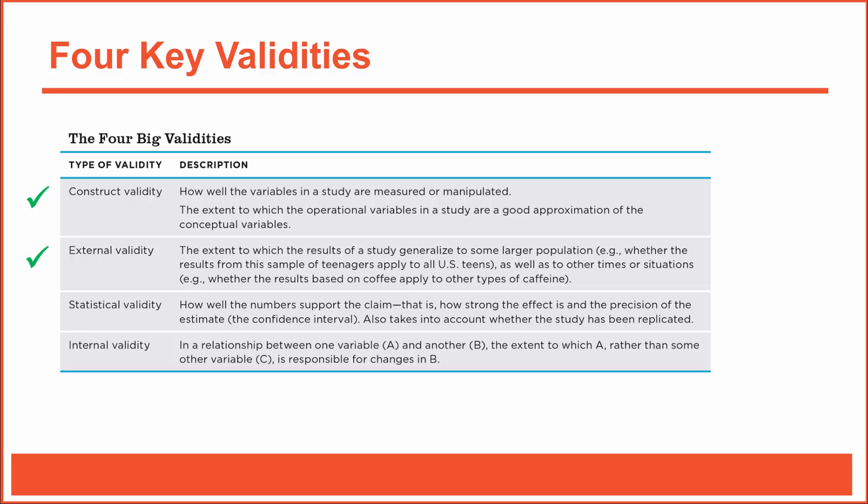Speaking of effective — just how effective did the new drug prove to be? To assess statistical validity, we'd want to know how strong the effect of the new drug is. Was there a statistically significant difference in depression between the research subjects who took the new drug and those who took the placebo? And just how big was the difference between those two groups? In other words, if we were to prescribe that new drug to our clients, how much of a reduction in depression might we expect to see?